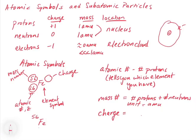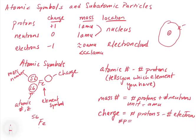The charge can be calculated as the number of protons minus the number of electrons. For example, with iron having 26 protons and 25 electrons: 26 minus 25 gives a charge of plus 1. When the number of protons equals the number of electrons, we call this a neutral atom. When the number of protons is greater than the number of electrons, this is a cation. When the number of protons is less than the number of electrons, this is an anion.